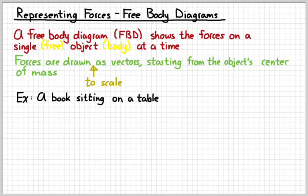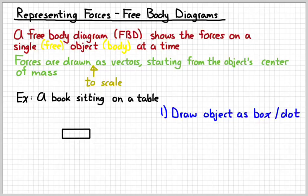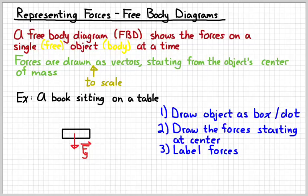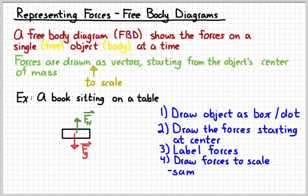Let's look at a simple example. Suppose you've got a book sitting on a table. Your first rule is to draw the object as a box or a dot, then draw the forces acting on it starting from its center. There are two forces acting on a book sitting on a table. The book always has weight pulling it down — label that F subscript G — and then a normal force pushing it back up, which is the force the table exerts. Draw them to scale: two forces of the same size should be the same length. The force of gravity and the normal force are the same size because the book doesn't go up or down — it's at rest, so the forces are balanced.